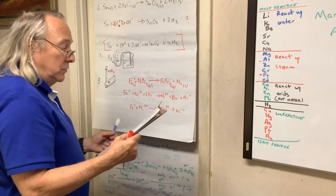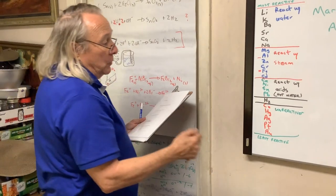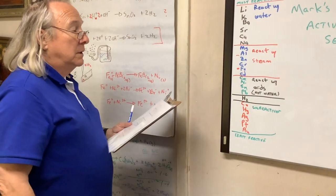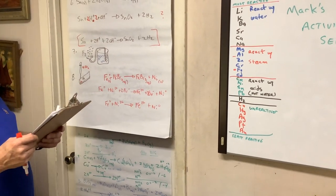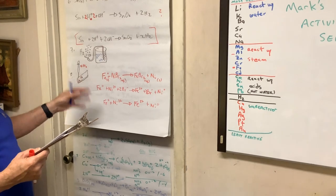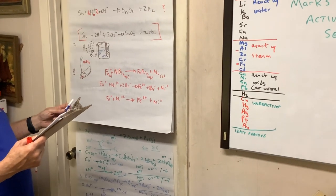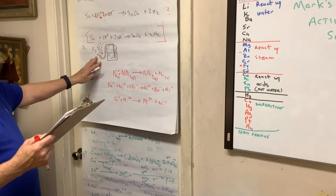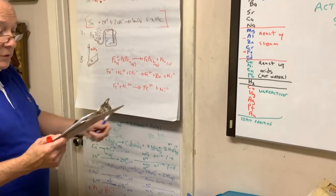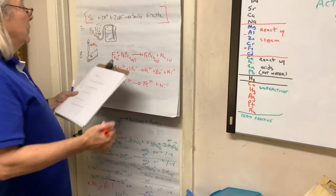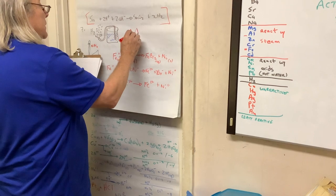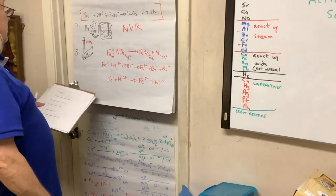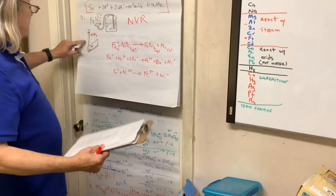For question seven: hydrogen gas is bubbled through a solution of lead nitrate. Looking at the activity series, lead is above hydrogen, not below it. Since elemental metals can only replace metals that are below them in the activity series, there is no visible reaction.